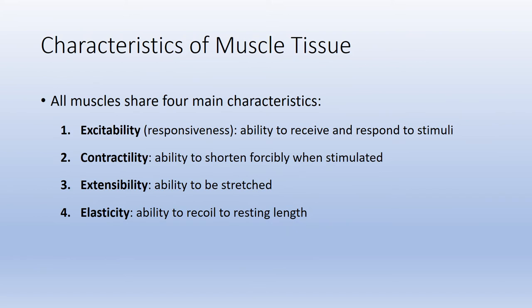No matter what type of muscle tissue you're talking about — skeletal, cardiac, or smooth — all three tissue types share four main characteristics, and you should know each one and its definition. The first is excitability: muscle tissue receives a stimulus in the form of an action potential, and its response is to contract or develop force. The second is contractility: when we flex our muscles, we are contracting them. A muscle contraction is the shortening of muscle tissue to generate force.